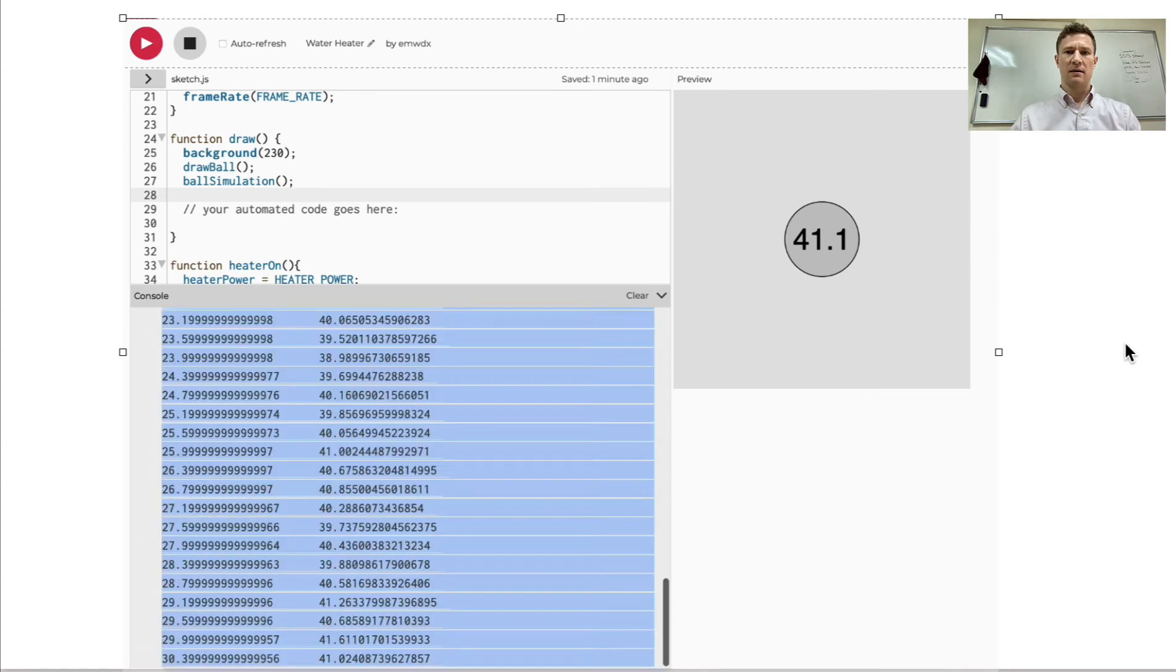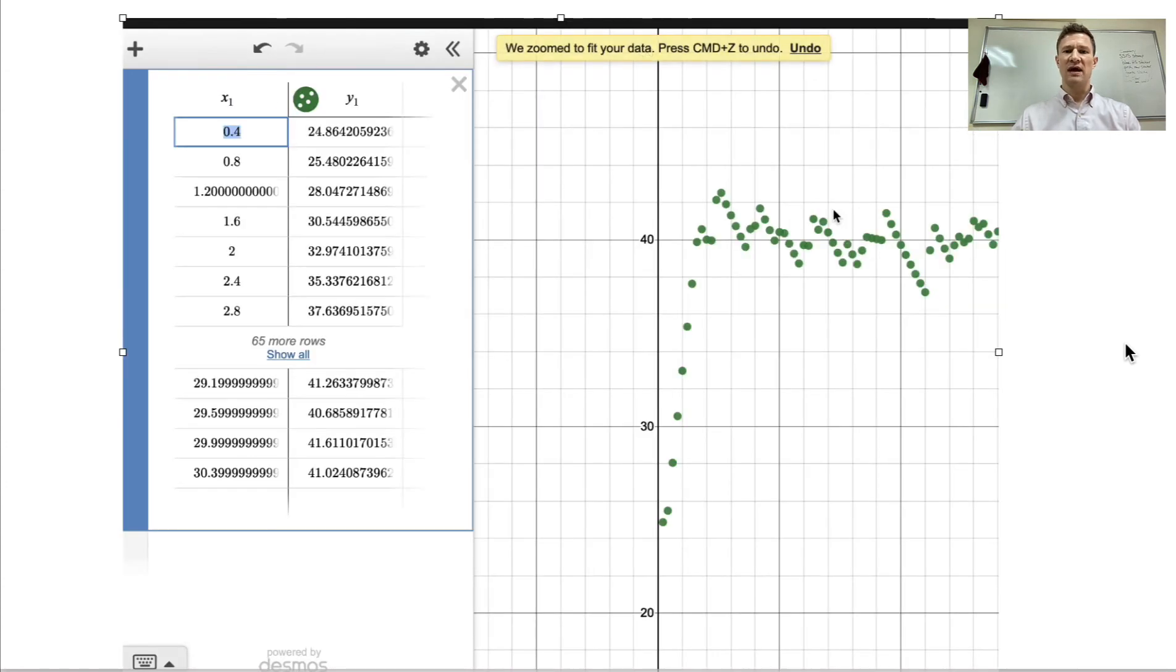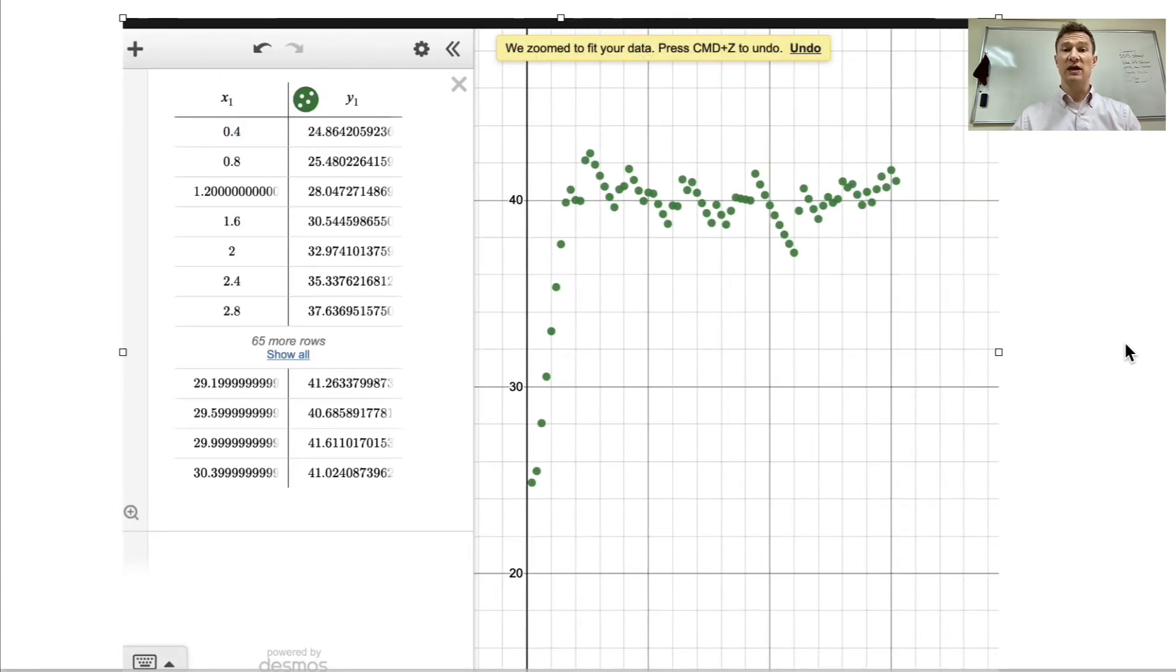You can take that data, copy it, and then paste it right into Desmos, which will make it so that you can see how well you were able to do in keeping the temperature close to 40 degrees Celsius.